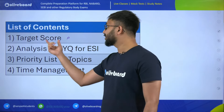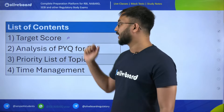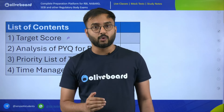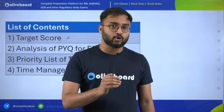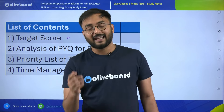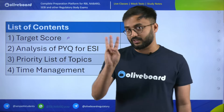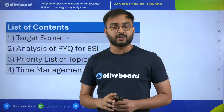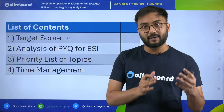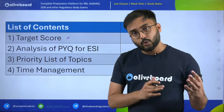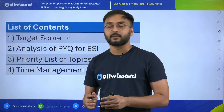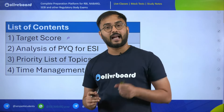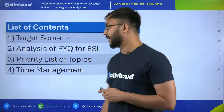We'll first discuss based on cutoff analysis and target score. Second, we'll discuss analysis of previous year questions, where you will understand which are the important topics that always repeat in RBI grade B exam. We'll see the previous year analysis of three years. Then I'll give you a priority list of topics — the overall table of contents according to the syllabus — and tell you which are priority one, two, and three topics. Lastly, time management and overall strategy to ace and get maximum marks in ESI.